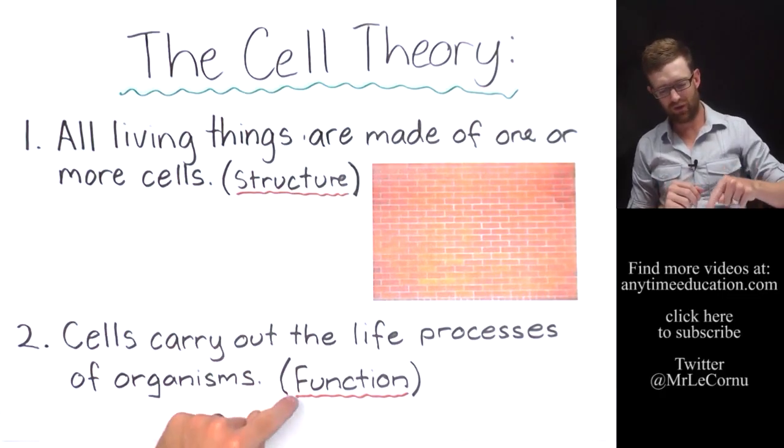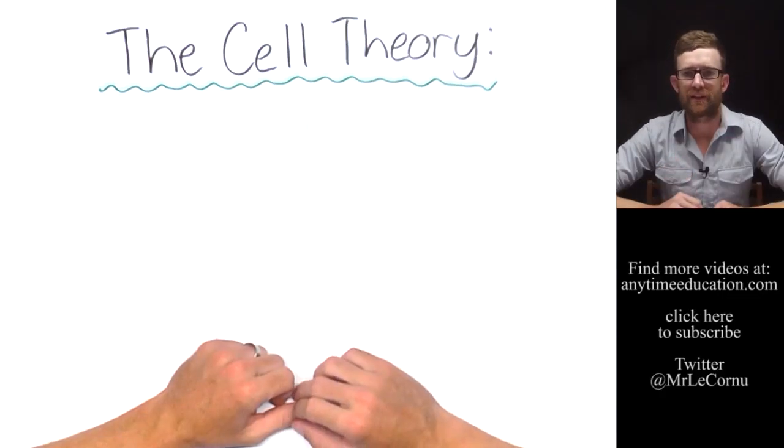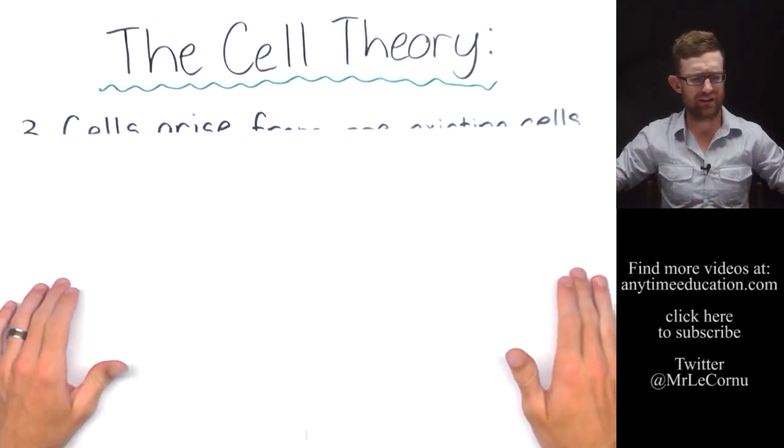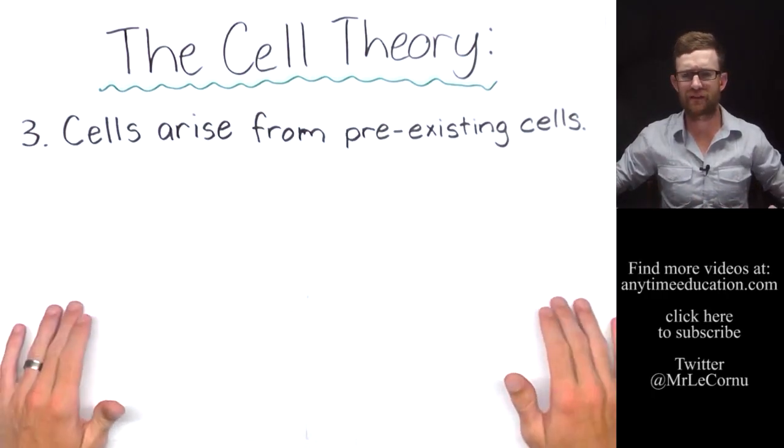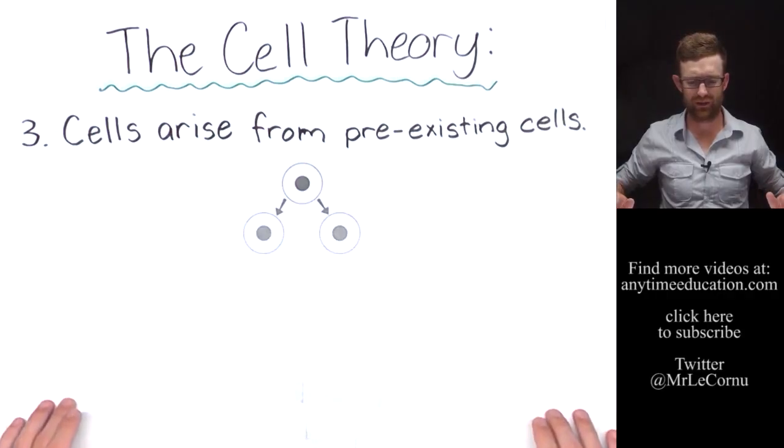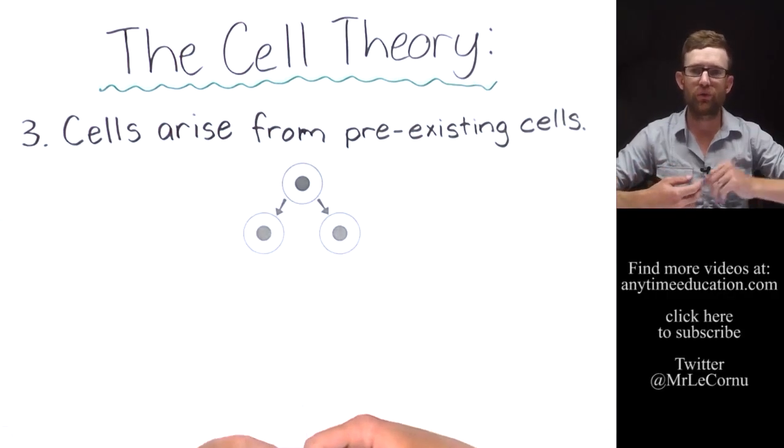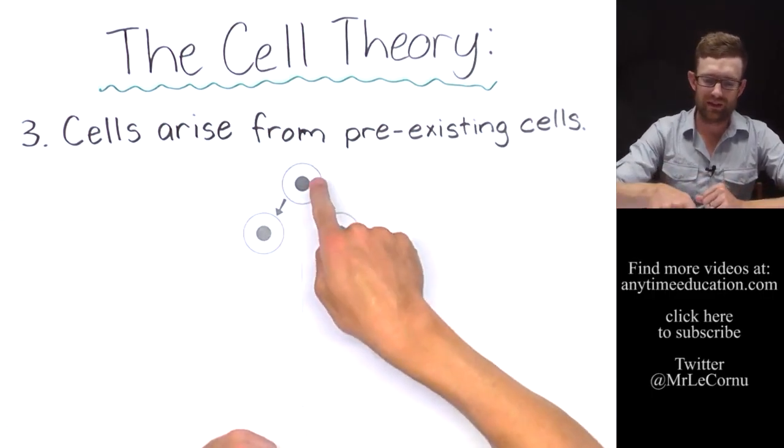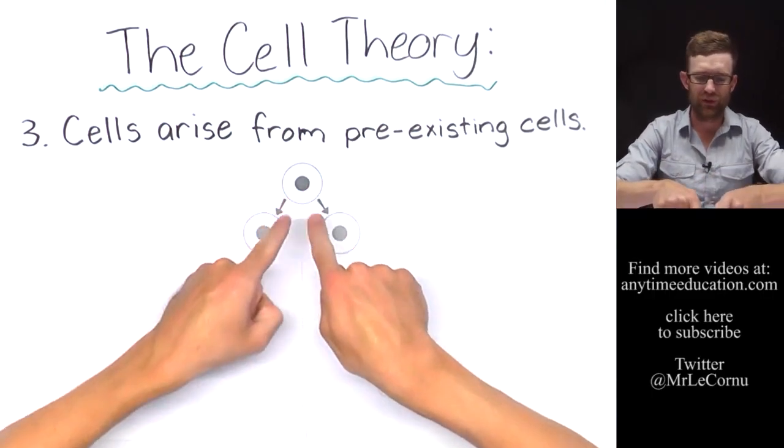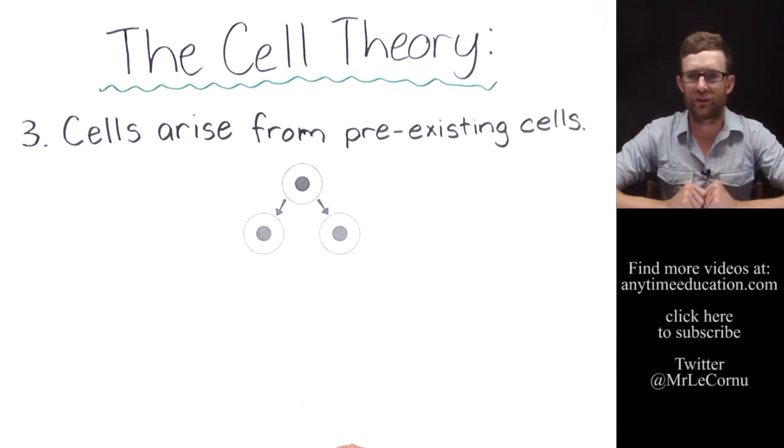The next point stated in the cell theory is that cells arise from pre-existing cells, meaning new cells come from old cells through cell division. Here's an example here of one cell dividing into two new cells.